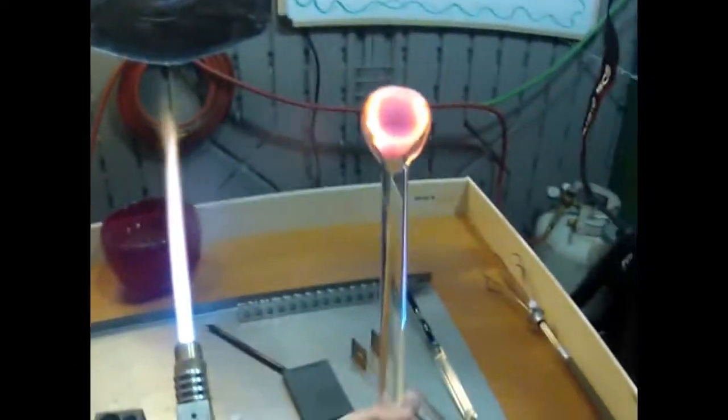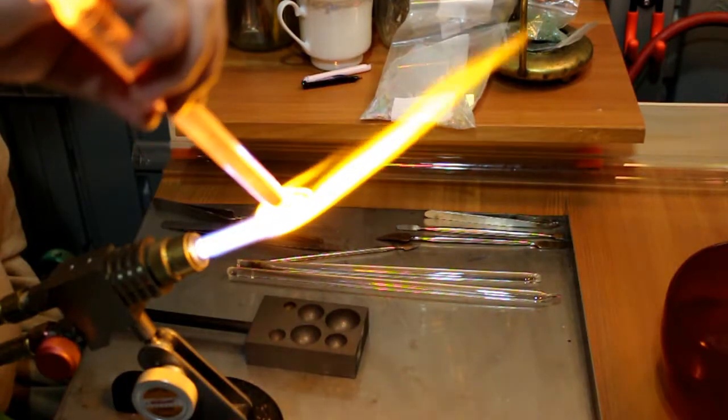Now I'm melting all of those colors in, including the dichroic glass, to make one smooth piece.